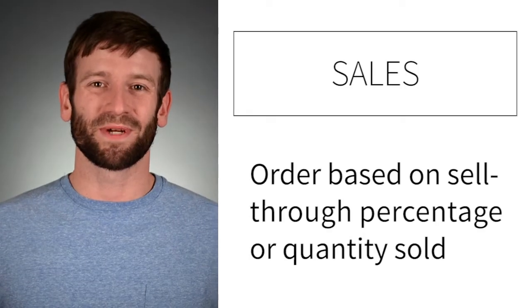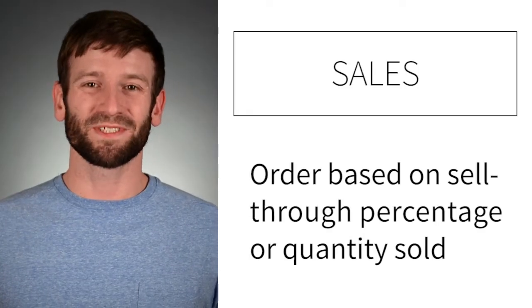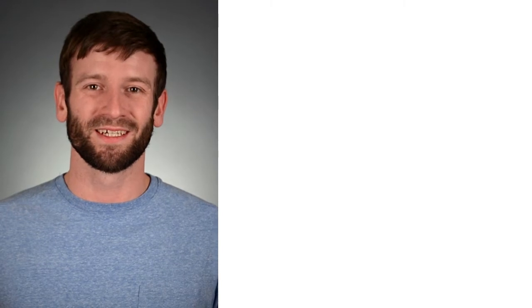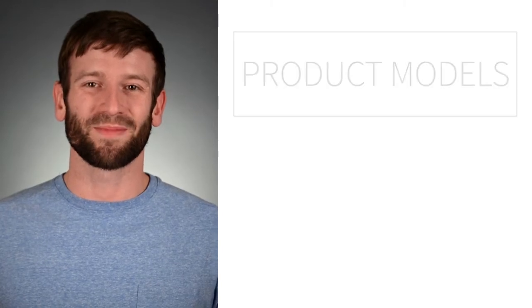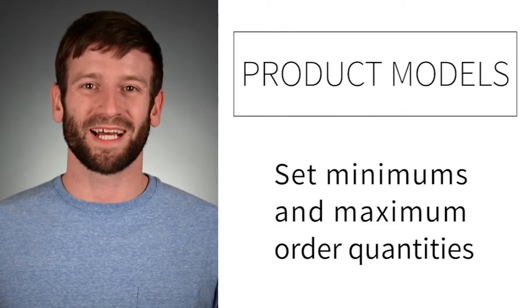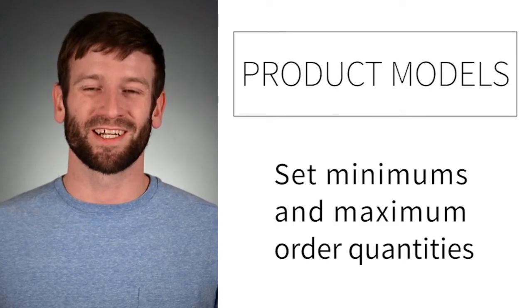Sales allows you to order based on sell-through percentage or quantity sold. With product models, you can set minimum and maximum order quantities. When you know how your inventory is performing, you can save time and make sure you have the products your customers want when they want it.